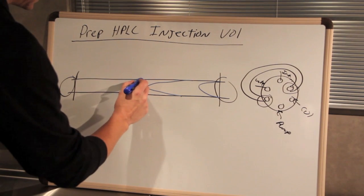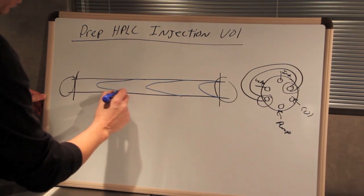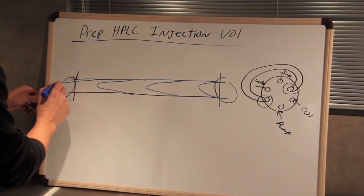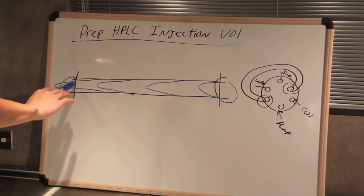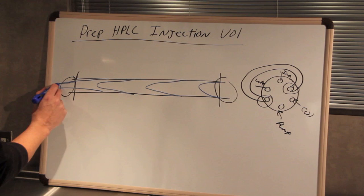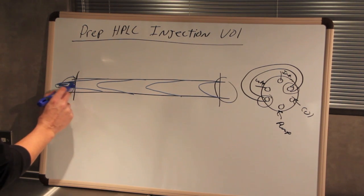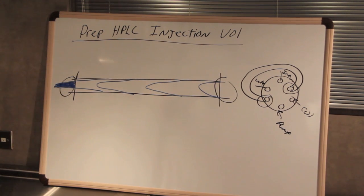And that parabolic shape gets more and more exaggerated as you move through the column, or through the sample loop, so you can see right here that this portion of our sample is actually going out to the waste line.